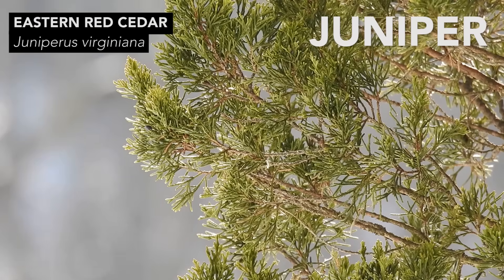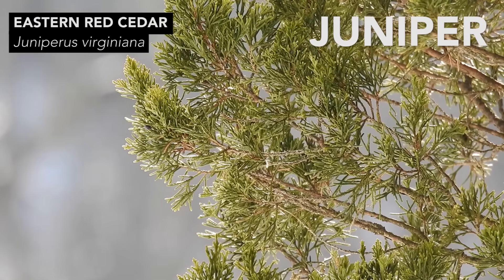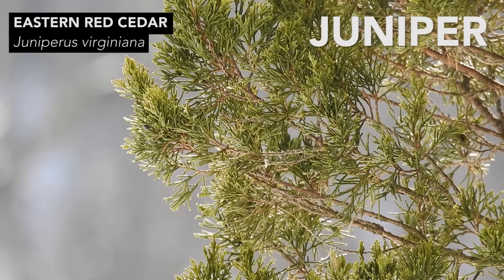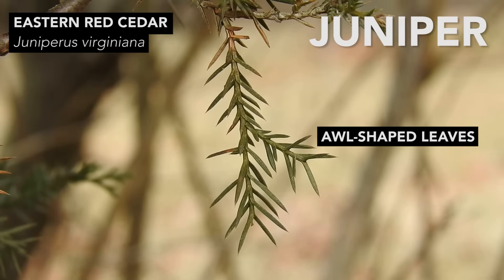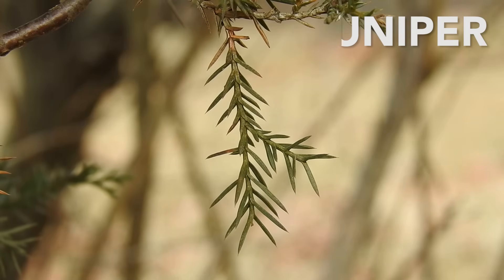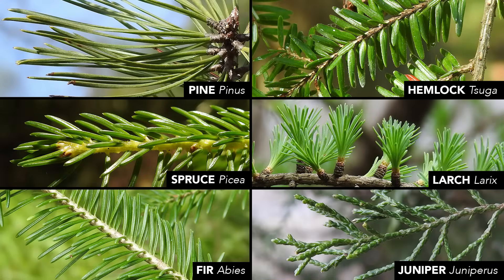Junipers, which include eastern red cedars, have evergreen leaves of two types. Most often you will see scale-like leaves tightly pressed together on the branches, but you will also see awl-shaped leaves that taper to a point and are prickly when you touch them. When you learn the differences in leaf anatomy between these six genera, you will feel more confident saying: that's a pine, that's a spruce, that's a fir, that's a hemlock, that's a larch, that's a juniper.